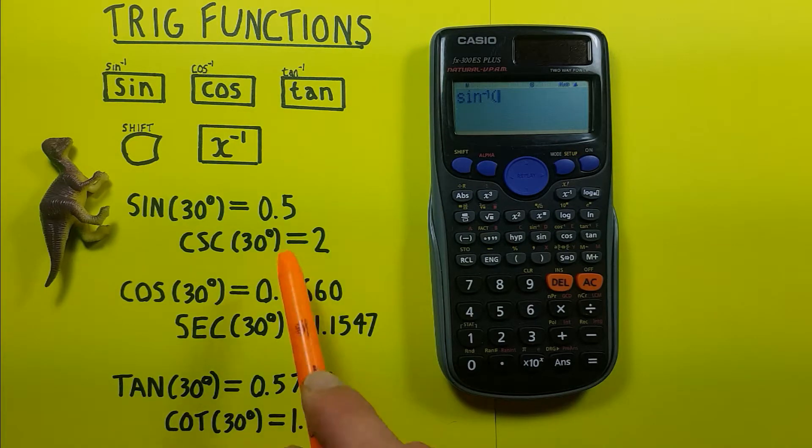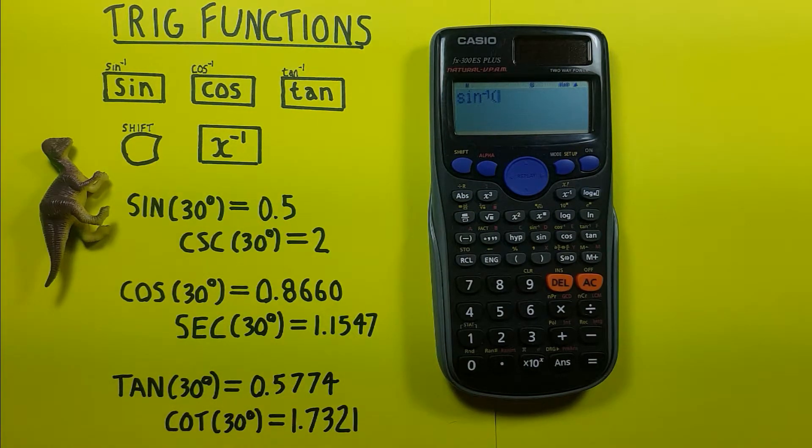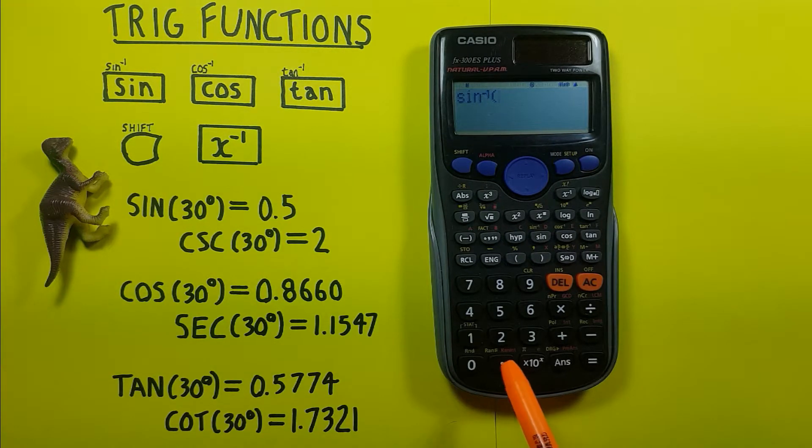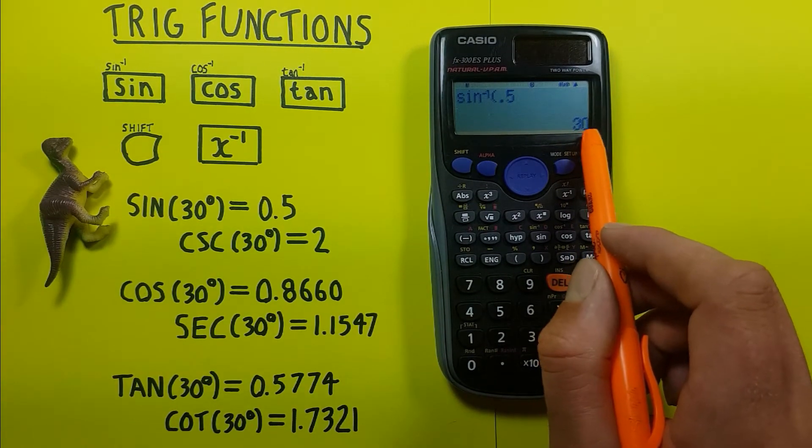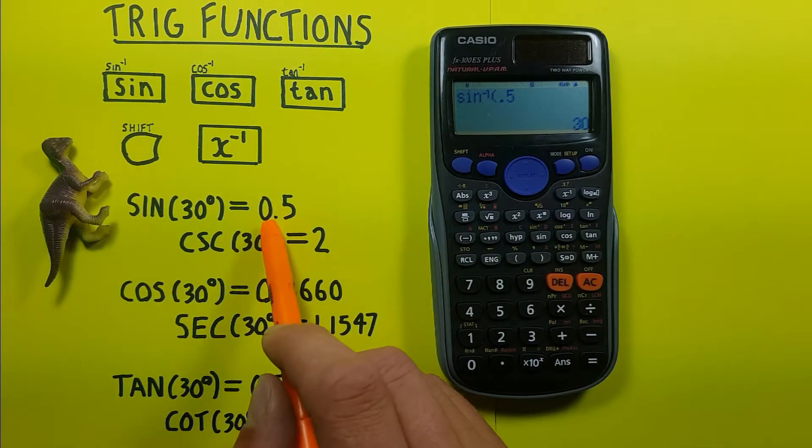Now this is useful for going from the 0.5 and finding out how many degrees were used. So if we enter 0.5 here and press enter, we see we get 30, which tells us 30 degrees were used to get that 0.5.